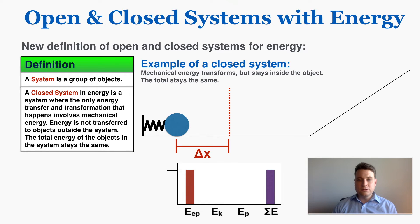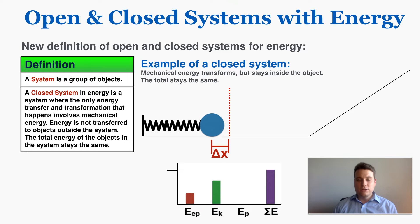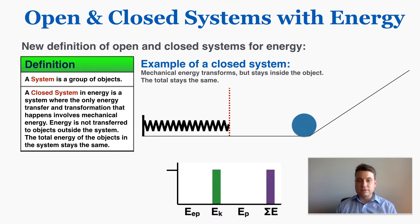The idea of a closed system in energy is that if the only transformation happening is from one type of mechanical energy to another, the total amount of energy in the system remains the same even if the specific type changes. As an example, when the ball is released, the elastic potential energy is converted into kinetic energy. All of its energy becomes kinetic — the same total amount it had when compressed in the spring, just existing in the object itself rather than the spring.